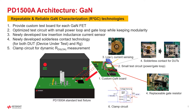Here is a brief overview of the GaN device test solution which solved the issues mentioned earlier. First of all, we provide customized test boards for each GaN device, which integrates all necessary components in one board while keeping modularity. This architecture minimizes parasitic inductance and provides an ideal test environment. Secondly, we developed new technologies, which we call Repeatable and Reliable GaN Characterization — R2GC technologies. One is the low insertion inductance current sensor, which minimizes the power loop inductance of the test circuit.